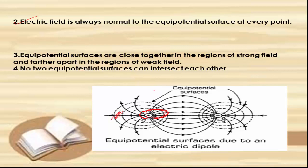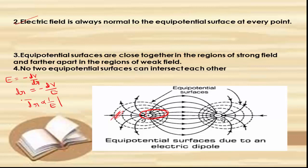Mathematically, we know that the electric field at any point equals the negative potential gradient: E = −dV/dr, so dr = −dV/E. For the same change in dV (where dV is constant), dr is inversely proportional to E. This means the spacing between equipotential surfaces is smaller where the electric field is stronger, and vice versa.